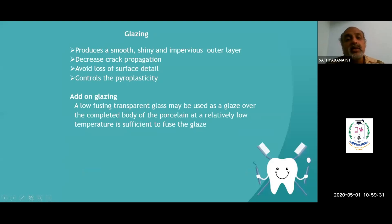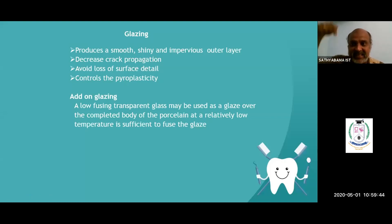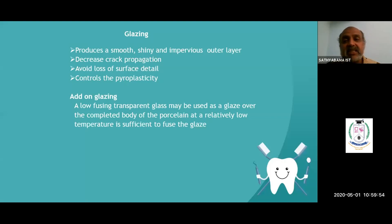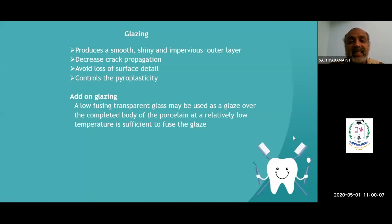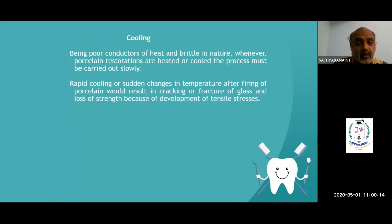Glazing is the procedure that produces a smooth, shiny layer seen on ceramic. It decreases crack propagation and improves surface details. There are two types of glazing: add-on glaze and self-glaze. Add-on glaze involves applying a low fusing transparent glass material — such as glycol — and then firing it to form the glaze layer.